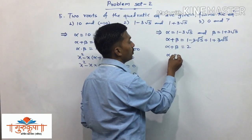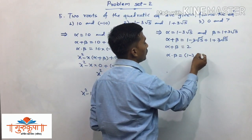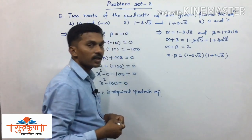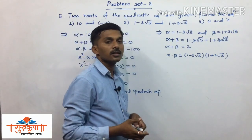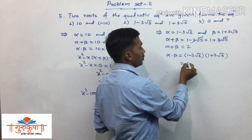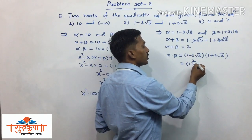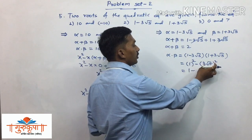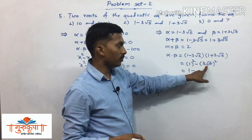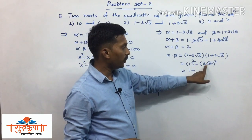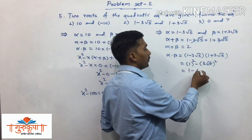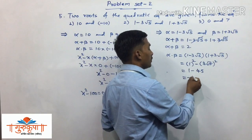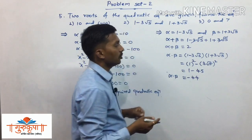Now we find the product of the roots: alpha into beta equals (1 minus 3 root 5) multiplied by (1 plus 3 root 5). Since both brackets are in the form (a minus b)(a plus b), we use the identity a squared minus b squared. So we write 1 squared minus (3 root 5) squared. That is 1 minus 9 times 5, giving 1 minus 45, which equals minus 44. So the product of the roots is minus 44.